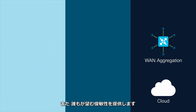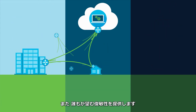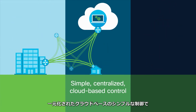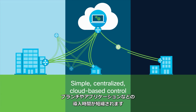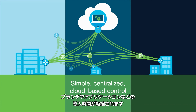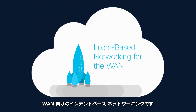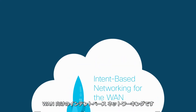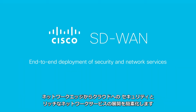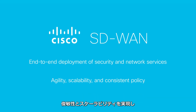Cisco SD-WAN also gives you the agility everyone covets, providing simple, centralized, cloud-based control of your WAN to accelerate deployment times for new branches, applications, and capabilities. This is intent-based networking for the WAN, simplifying the deployment of security and rich network services from the network edge to the cloud, while delivering agility, scalability, and consistent policy enforcement across thousands of endpoints.